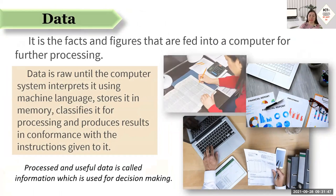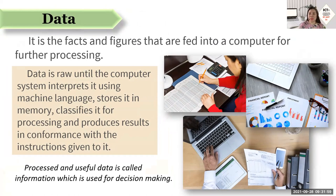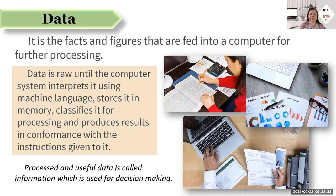Another important element of a computer system is data. When we say data, those are the facts and figures that are fed into a computer for further processing. Before we can generate information or a meaningful result, we first have to have data — we get ready first with the things we are to input to the computer. Data is raw, and the computer system interprets it using machine language, stores it in memory, classifies it for processing, and produces results in conformance with the instructions given to it. Processed and useful data is called information, which is used for decision making.